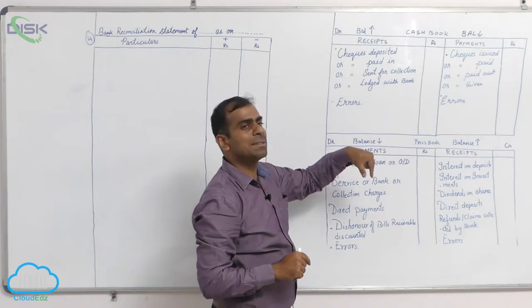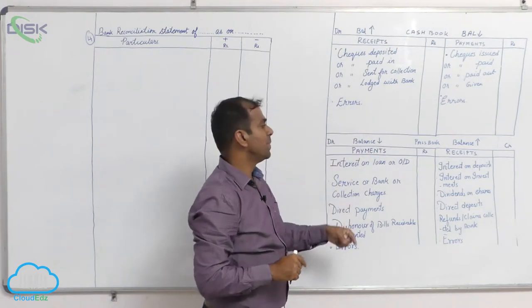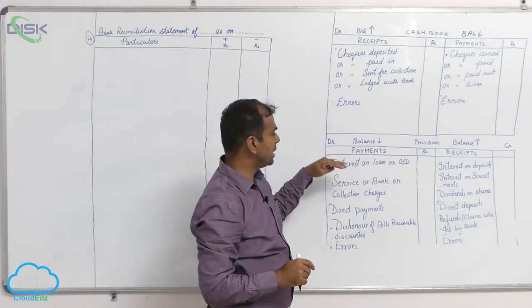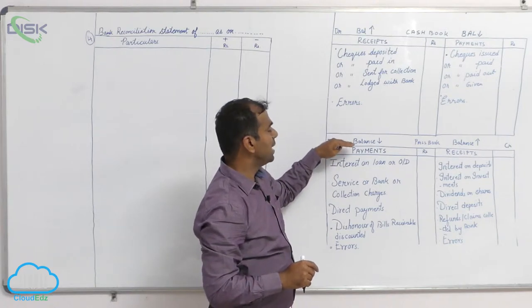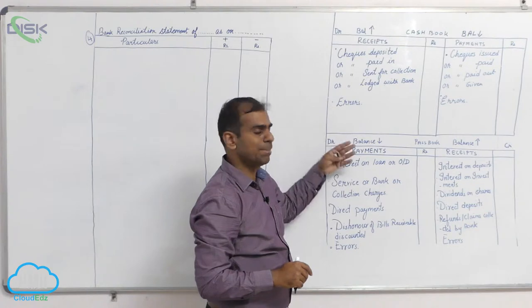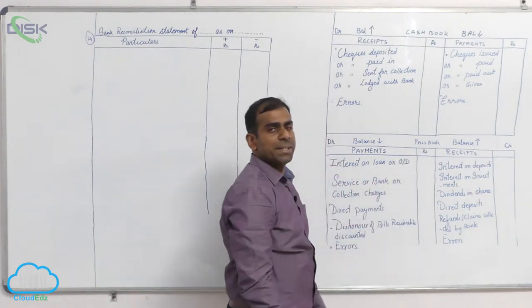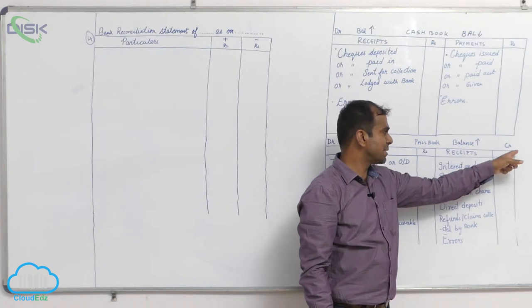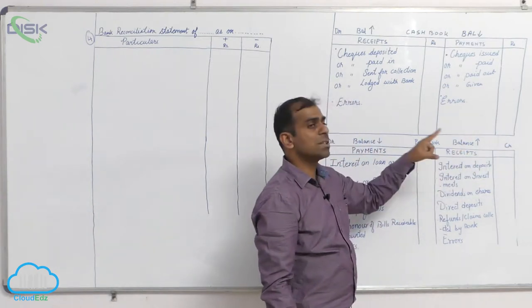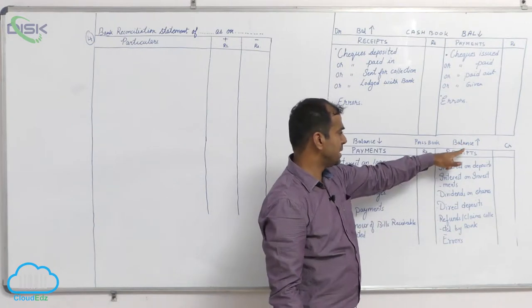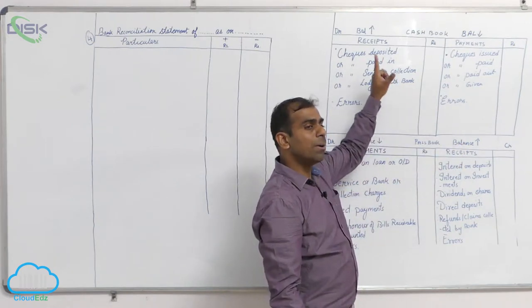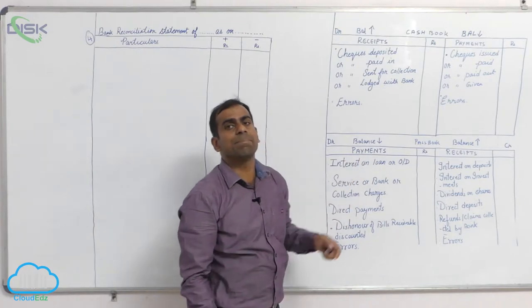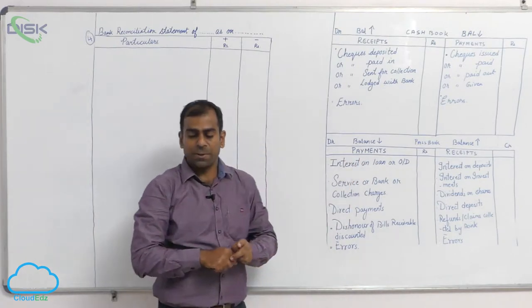When the cash book balance decreases, the pass book balance for the same effect will increase. Now coming to the pass book — when an entry is made on the debit side, according to the bank, the balance will decrease, meaning your money in the bank. Similarly, if an entry is made on the receipt side of the pass book, that is the credit side, the bank balance will increase. Based on these simple rules, we will solve the fourth problem.